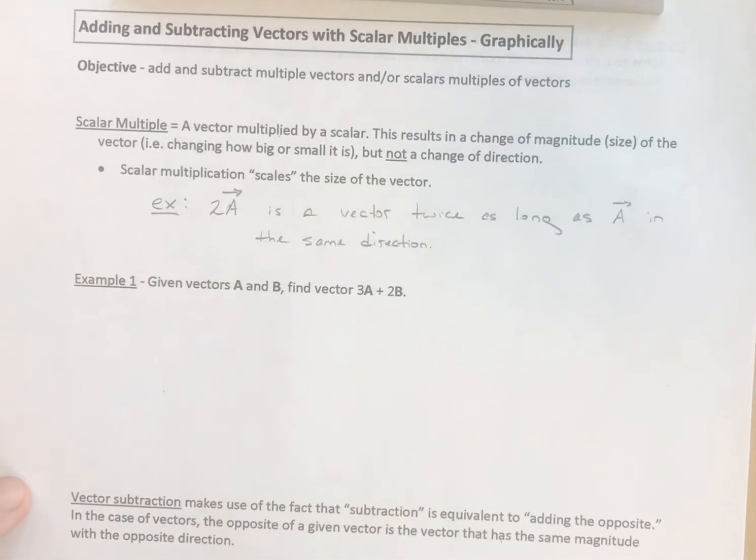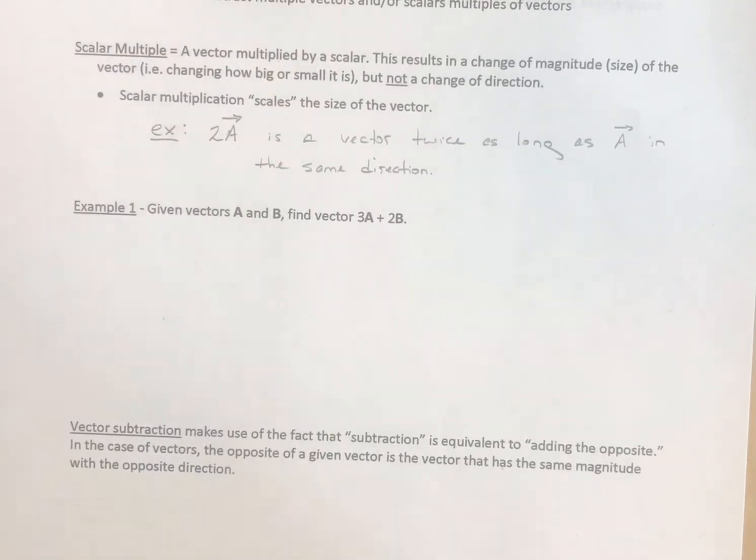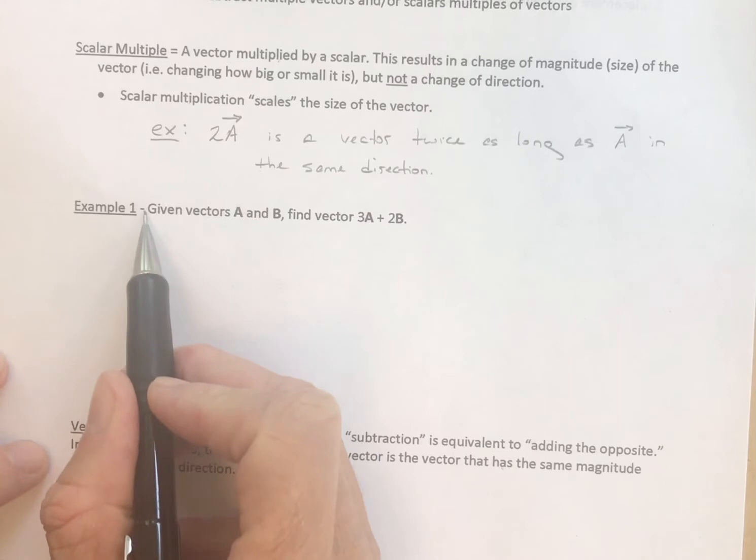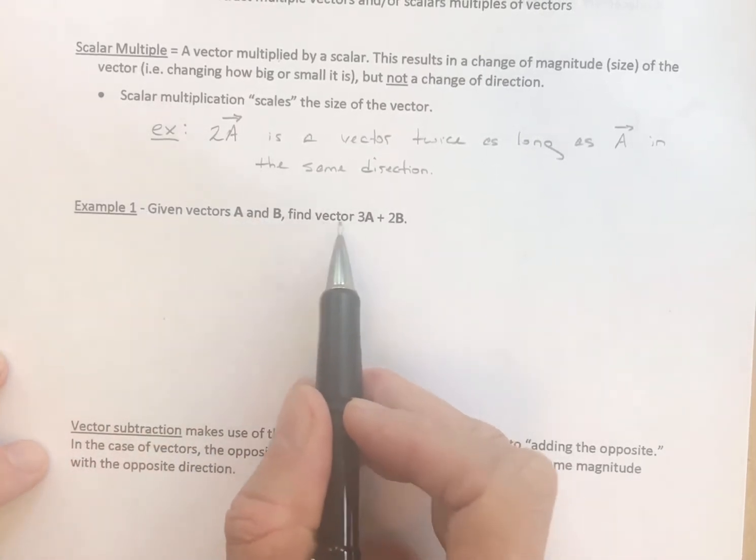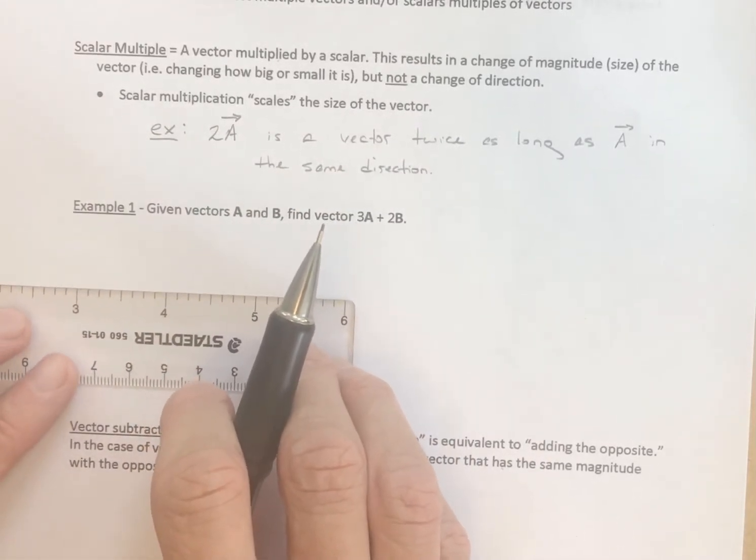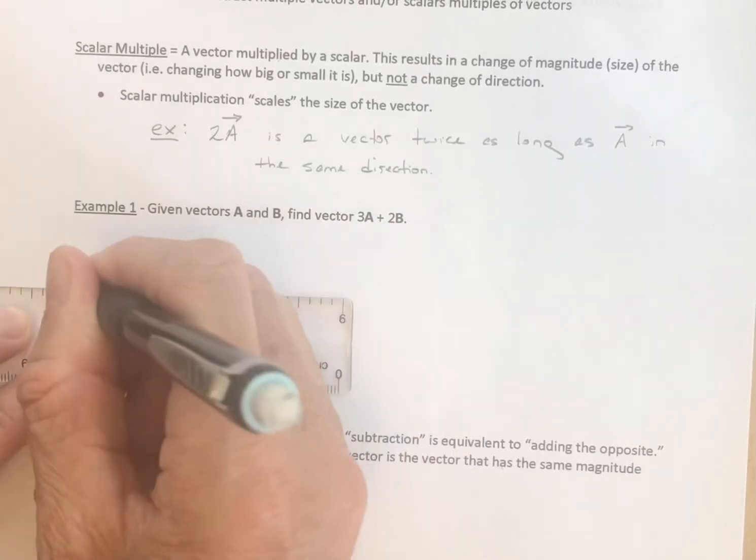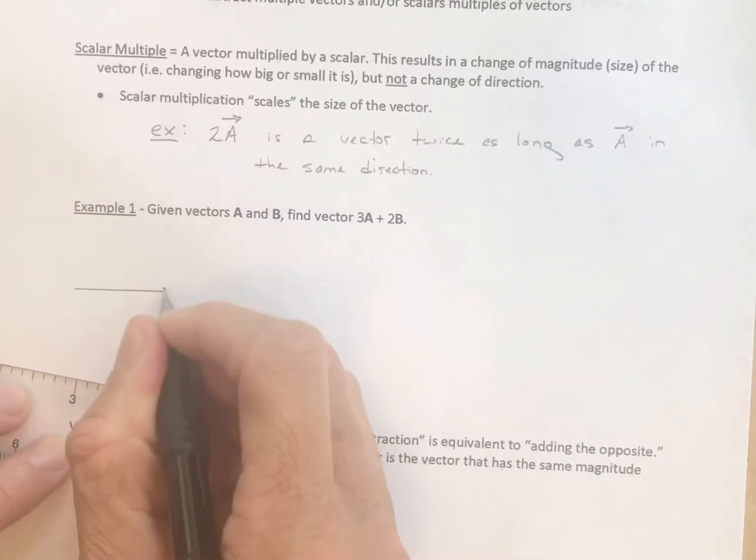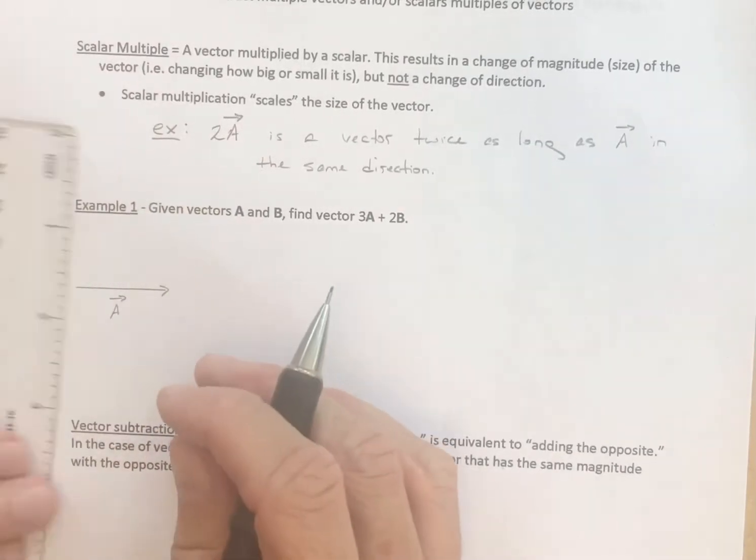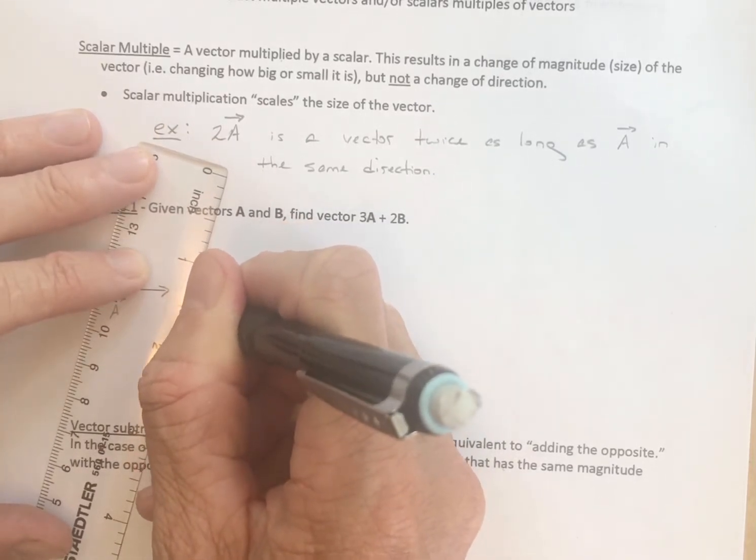All right, let's take a look at an example of this. I'll use my ruler to give us a better sense, make it reasonably precise. Example 1, given vectors a and b, find the vector 3a plus 2b. Well I need to give you vectors a and b.